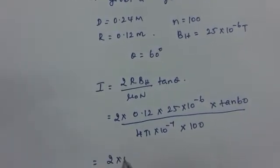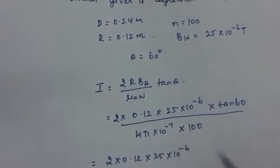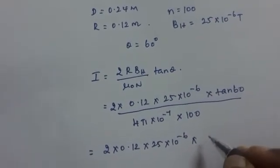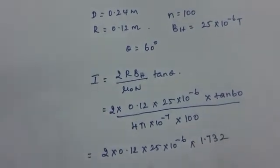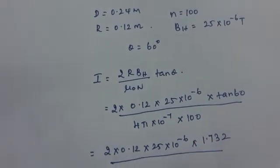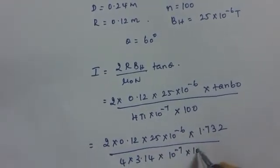This can be written as 2 into 0.12 into 25 into 10 raised to minus 6 into tan 60 is root 3. Root 3 value is 1.732 divided by 4 into 3.14 into 10 raised to minus 7 into 100.